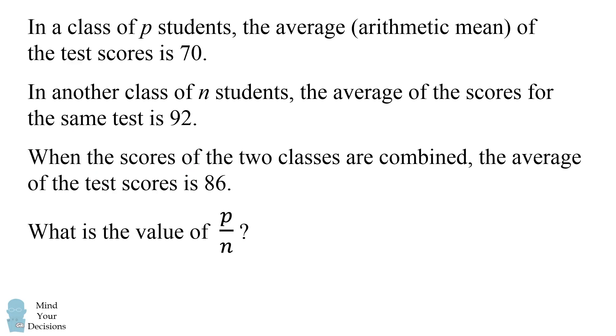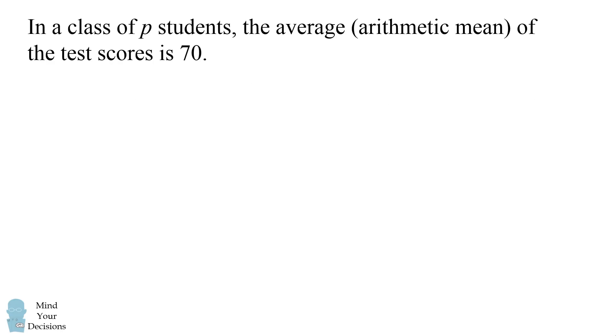So how can we solve this problem? Let's translate each sentence into a mathematical equation. The first sentence says that if you take the sum of the test scores for the first class divided by the number of students, which is P, you get an average score of 70. In other words, the sum of all the scores is equal to 70 times P.